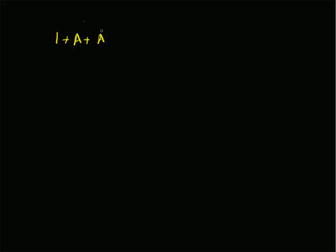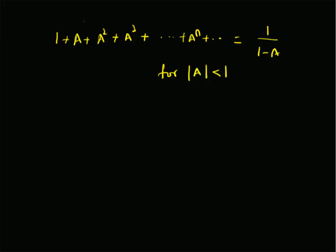It looks like the geometric power series 1 + a + a² + a³ and so on, where the general term is a^n. This series is given by 1/(1 − a) for values where the absolute value of a is less than 1. When |a| < 1, the summation converges and equals 1/(1 − a).